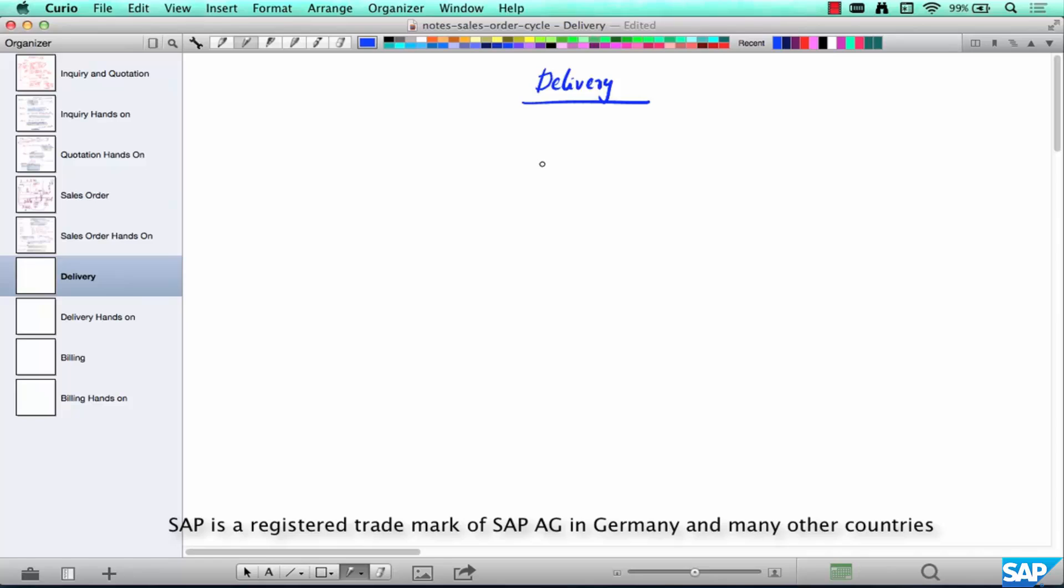Delivery. We have finished our pre-sales documents - inquiry, quotation - and then Walmart has placed an order. This is a sales document.